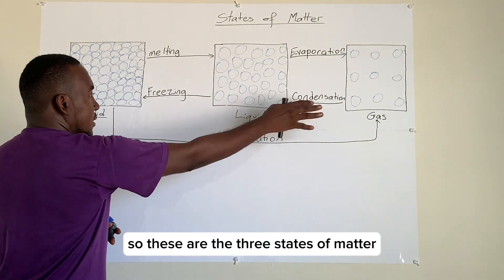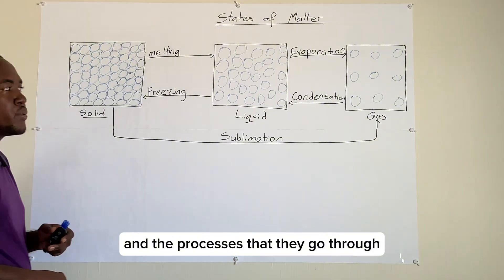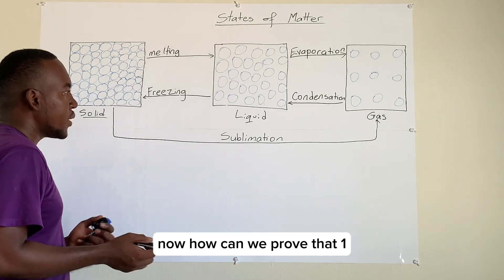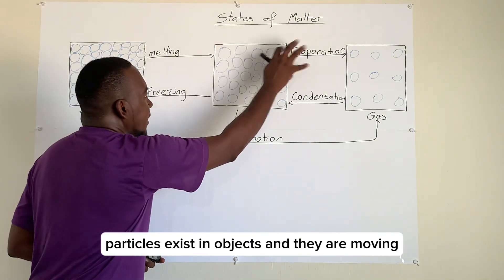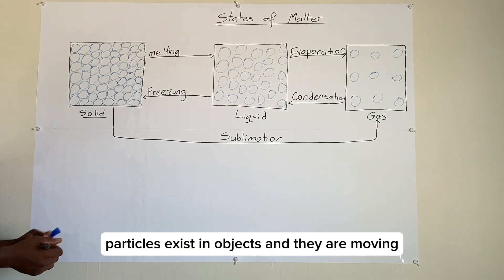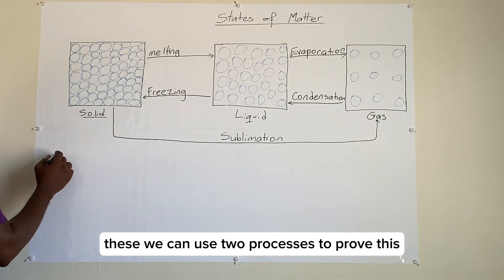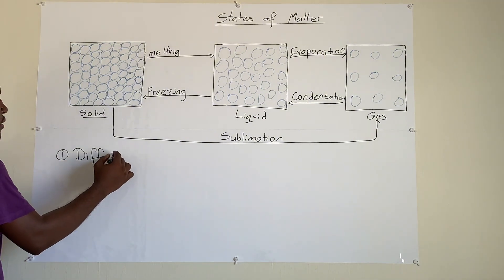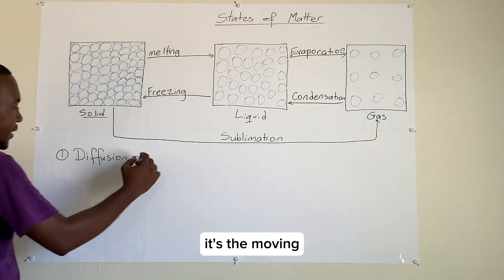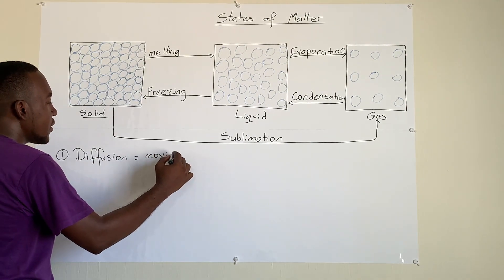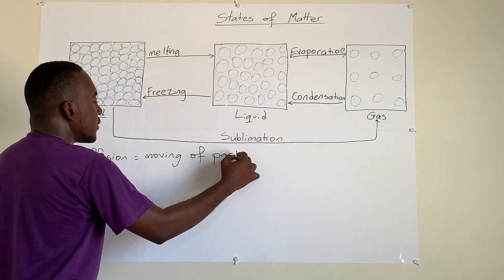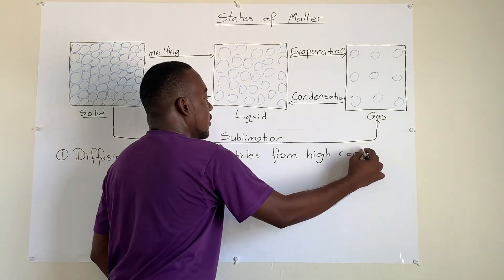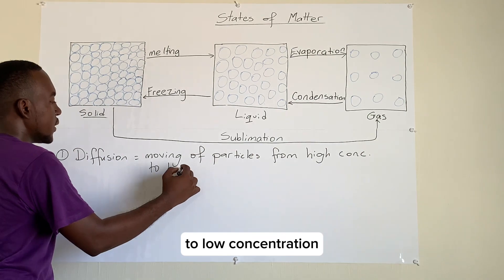So these are the three states of matter and the processes they go through to convert between different states. Now, how can we prove that particles exist in objects and that they are moving? We can use two processes to prove this. One is called diffusion, which is the movement of particles from high concentration to low concentration.